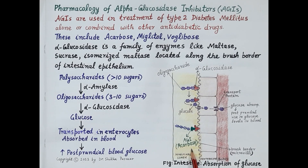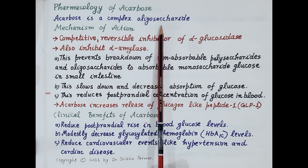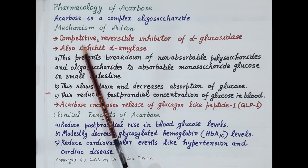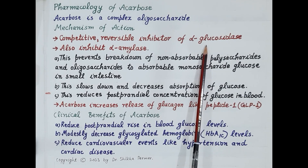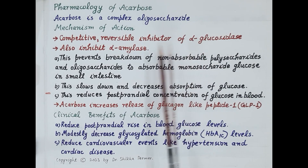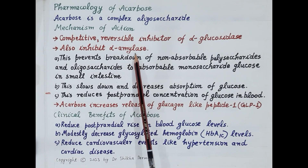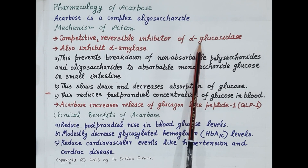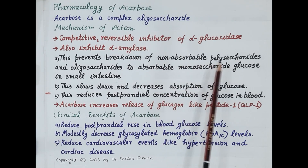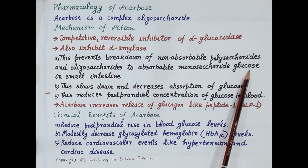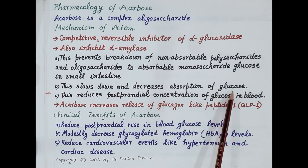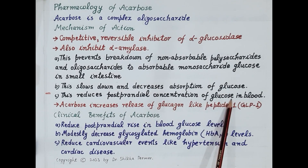Now let's discuss the pharmacology of acarbose in detail. Acarbose is a complex oligosaccharide and a competitive, reversible inhibitor of the enzyme alpha-glucosidase, which prevents breakdown of oligosaccharides and release of glucose in the small intestine. Acarbose also inhibits the enzyme alpha-amylase, preventing breakdown of polysaccharides to oligosaccharides. Thus acarbose inhibits both alpha-glucosidase and alpha-amylase, so non-absorbable polysaccharides and oligosaccharides are not converted to glucose, slowing down and decreasing glucose absorption and reducing post-prandial rise in blood glucose.